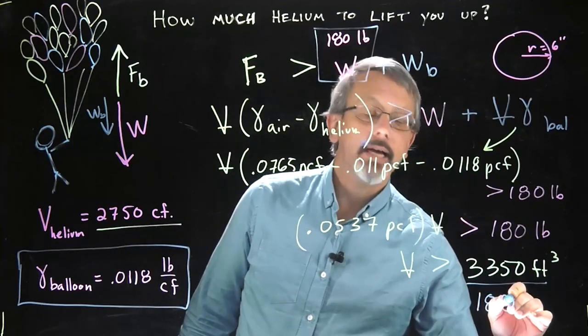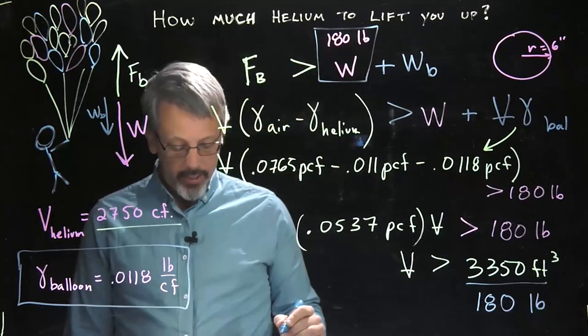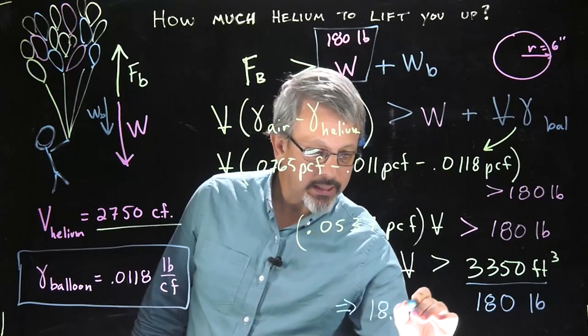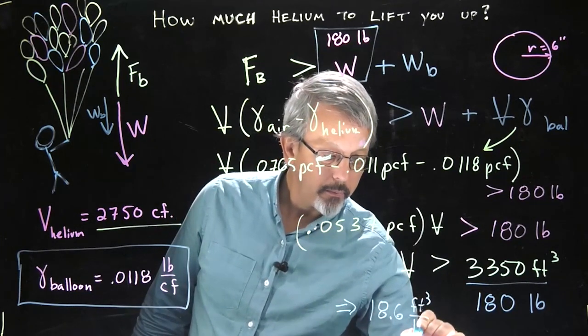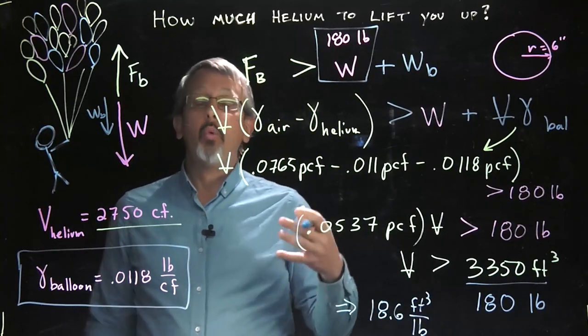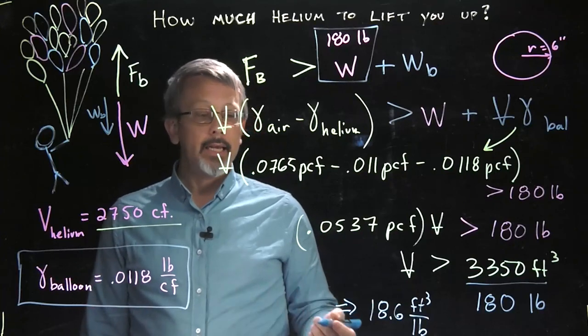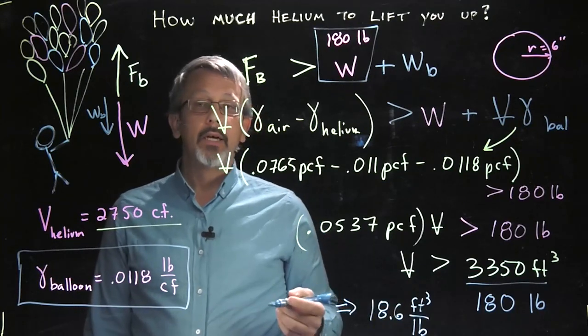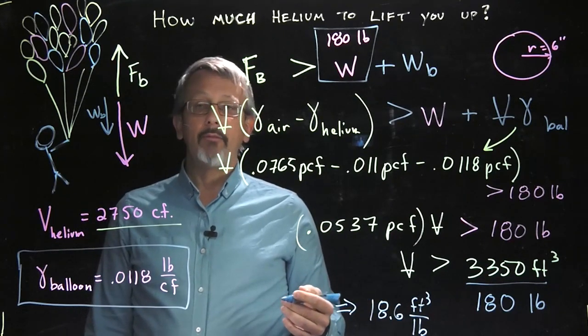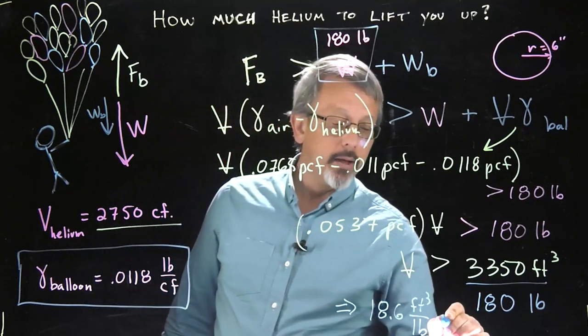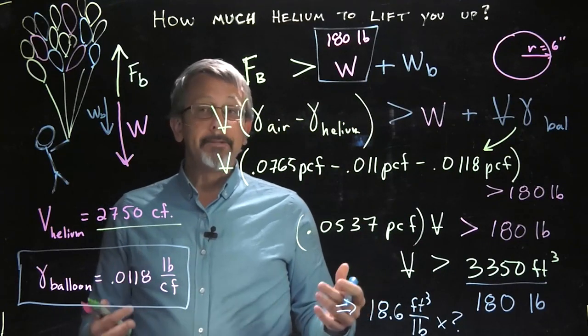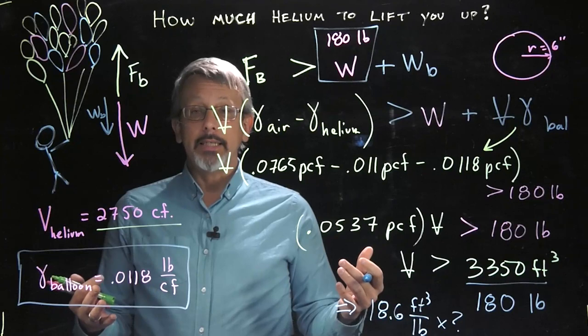So if I just simply divide this by my 180 pounds, I get a relationship of roughly 18.6 cubic feet per pound. In other words, if I want to lift one pound, I need, using 12-inch balloons, I need 18.6 cubic feet of helium in those balloons to do so. And now all you have to do if you wanted to find out for any other weight, you'd simply multiply by the number of pounds that you would actually want to lift. Another question might be, exactly how many balloons is it?